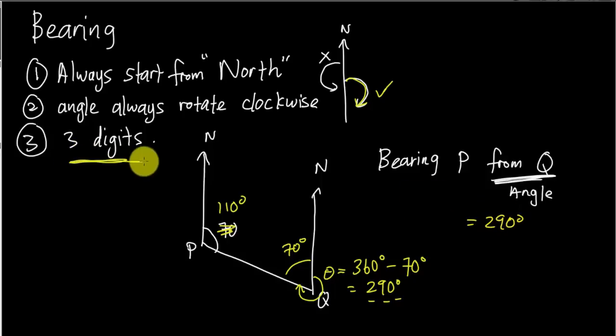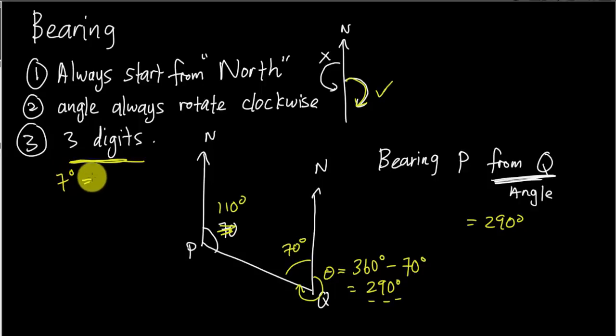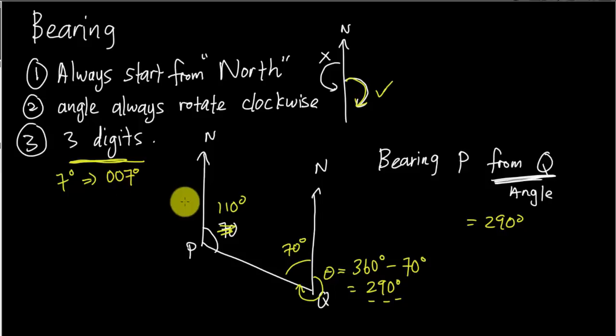I always want to make sure bearings are written in three digits. For example, if the bearing is only 7 degrees, we write it as 007 to ensure it is always three digits in bearing form.